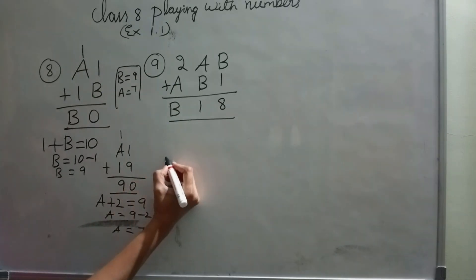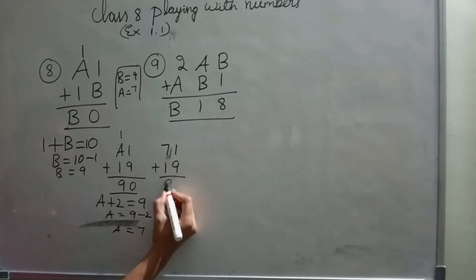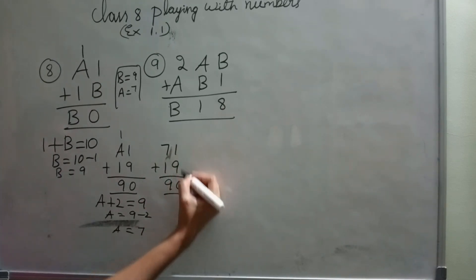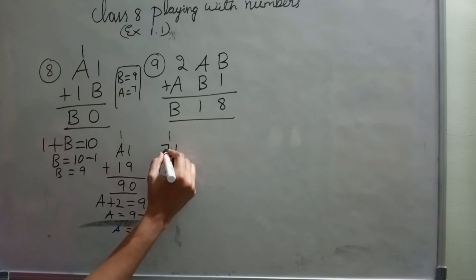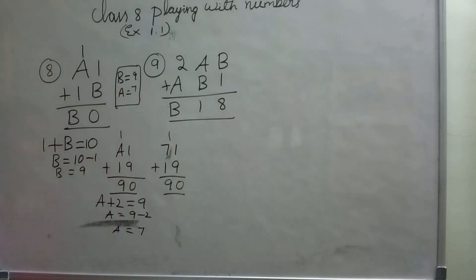Let's check. A is 7, 1, 1, 9. B is 9. 9 plus 1, 10. 1 plus 7, 8. 8 plus 1, 9. So B equals 9 and A equals 7 is the correct answer.